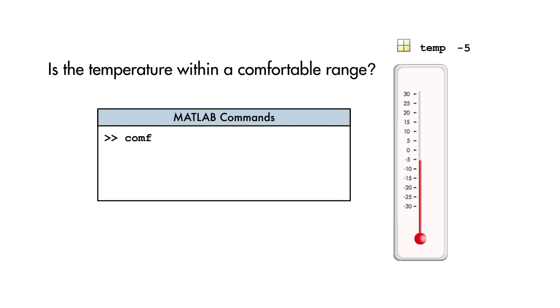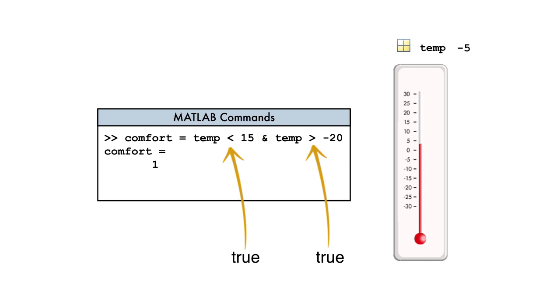To do this, we combine the two previous conditions using the AND operator. The result is true only if both conditions are satisfied. If the temperature changes and is not in the desired range, the result is false.